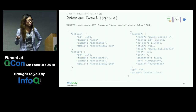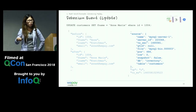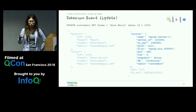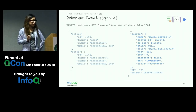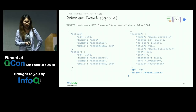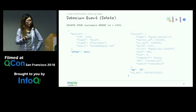A Debezium event has several sections: the 'before' section shows what the data looked like before the change; the 'after' section shows it after. The 'source' section provides metadata about the data source — server ID, file name and position, database, and table. Since MySQL 5.6 introduced GTID, Debezium can use GTID instead of file name and position. The 'op' field represents the operation type: U for update, C for create, D for delete. The timestamp is when the event was created in Debezium. For create events, 'before' is null; for delete events, 'after' is null.